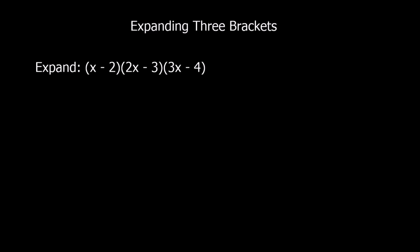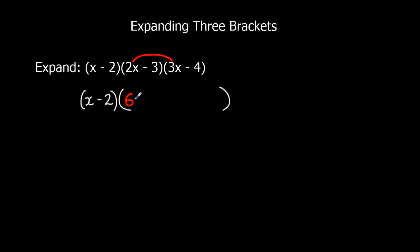Let's do another example now, this time with some negatives. Same process — we're going to ignore the first bracket and expand the second and third brackets. We do 2x times both terms in the third bracket, and then negative 3 times both terms. 2x times 3x: 2 times 3 is 6, x times x is x squared — so 6x squared. 2x times negative 4 is negative 8x. Negative 3 times 3x is negative 9x. And negative 3 times negative 4: a negative times a negative is a positive, so plus 12.